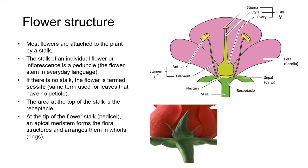Most flowers are attached to a plant by a stalk. The stalk of an individual flower or inflorescence is called a peduncle — in everyday language we just call it the flower stem. If there is no stalk, the flower is termed sessile, the same term we use for leaves with no petiole. The area at the top of the stalk is the receptacle, and at the tip of the pedicel there is an apical meristem where cells are rapidly dividing and forming all of the floral structures, arranging them into whorls.